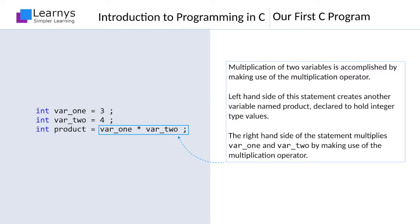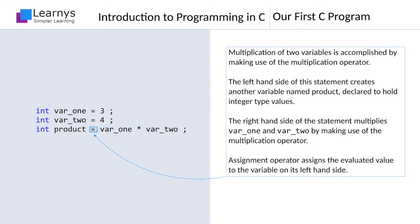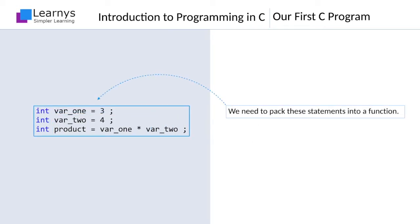Multiplying the variables is equivalent to multiplying the values held by these variables. Finally, the assignment operator assigns the evaluated value to the variable on its left-hand side. Once this statement has been executed, the variable product will hold the result of the multiplication, which is 12. These three statements put together create the effect of multiplying 3 and 4, but they are still far away from being called a program.